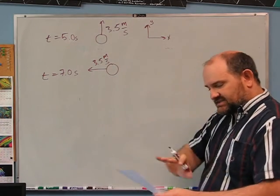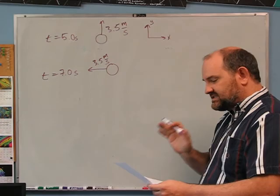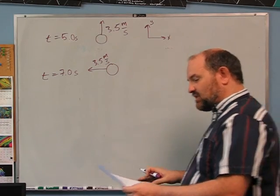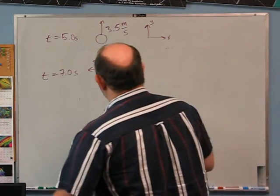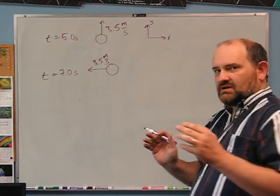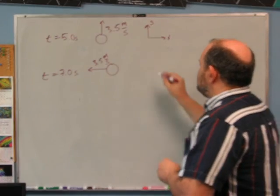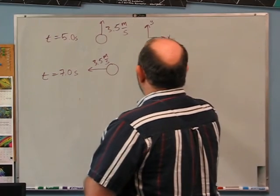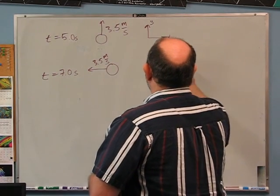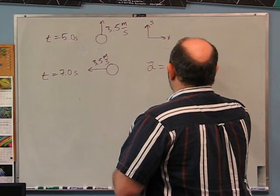What is the average acceleration of the hockey puck between t = 5 and t = 7 seconds? The definition of acceleration is delta v vector over delta t.